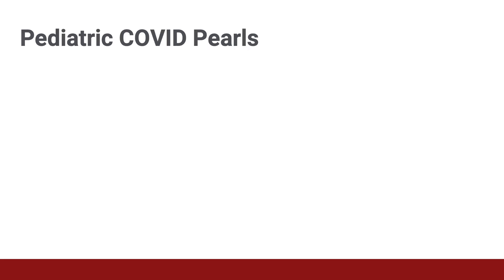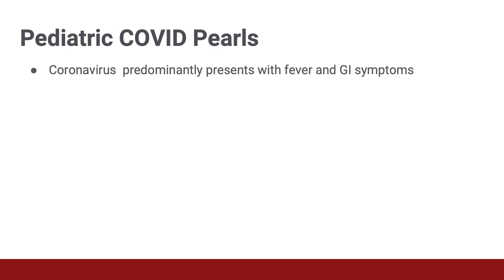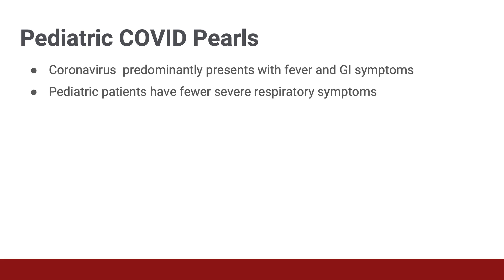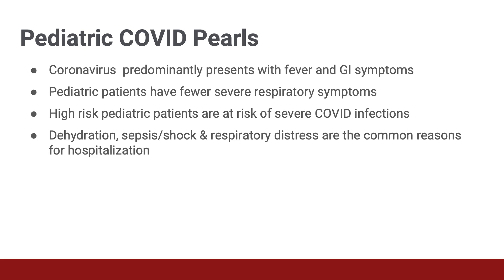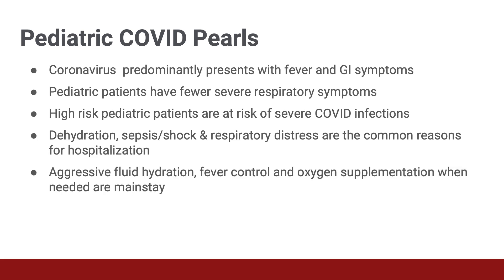Here are some key pearls. COVID in kids usually presents with fever and GI symptoms like vomiting and diarrhea. Pediatric patients have some respiratory symptoms, but they're usually not as severe. High-risk pediatric patients — children less than one year old or kids with comorbidities — are at risk for developing severe COVID. Most pediatric patients have mild symptoms and recover at home. The majority of pediatric COVID admissions are secondary to dehydration, but some may be admitted because of respiratory distress. Fluid hydration, oxygen supplementation, and fever control are the mainstay management for mild to moderate pediatric COVID patients.